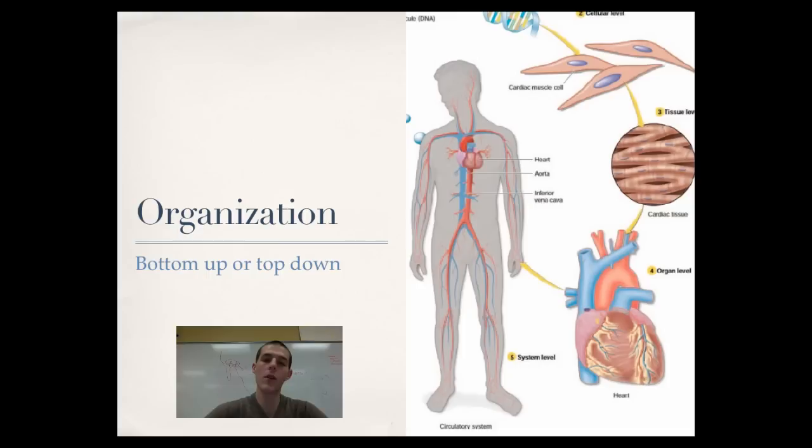If you take a top-down approach, you could say the digestive system is composed of the mouth, esophagus, stomach, small intestine, large intestine, and anus. Zooming down further, the stomach is highly folded with gastric juices that digest food, while the small intestine absorbs nutrients. When looking at how living organisms are organized, you can take either a bottom-up or top-down approach.